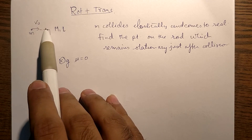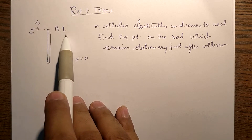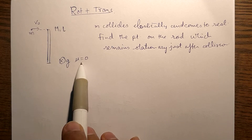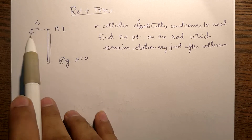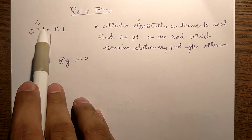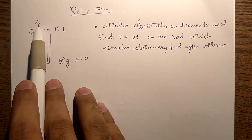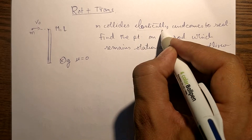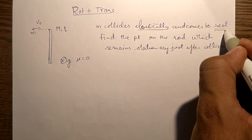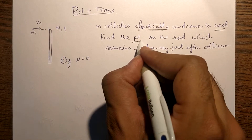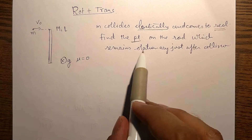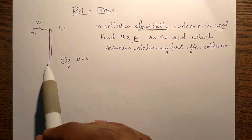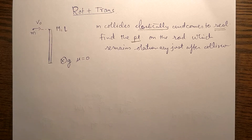A rod of mass M and length l is placed on a horizontal frictionless surface. Gravity is into the plane, and a small mass m, initially moving perpendicular to the length of the rod with velocity V₀, collides elastically and comes to rest. We need to find the point on the rod which remains stationary just after the collision.